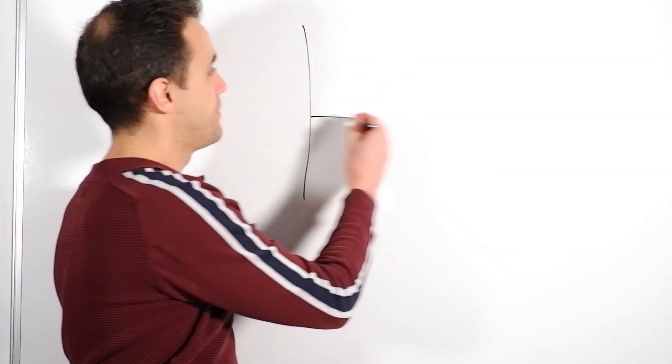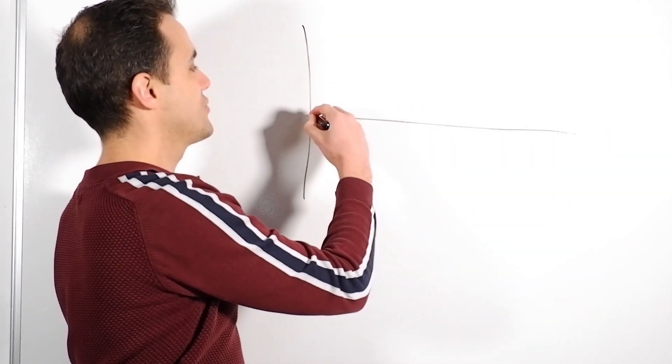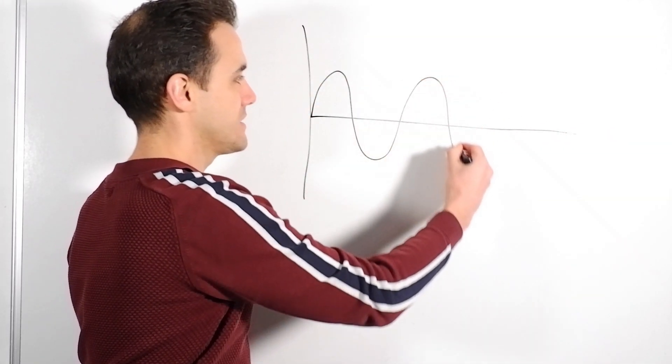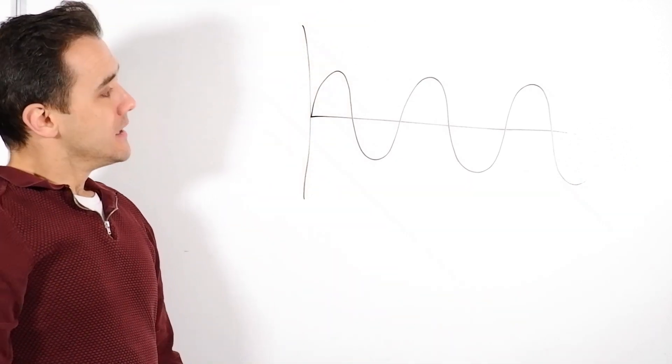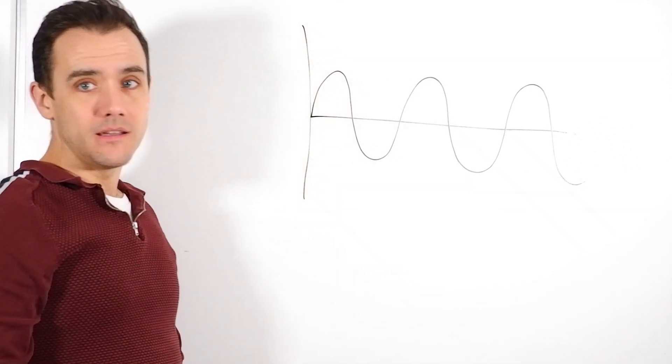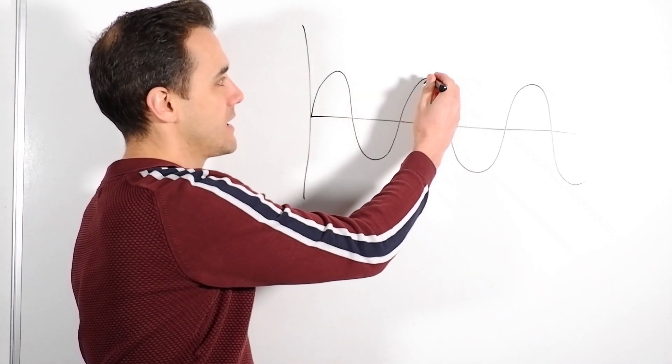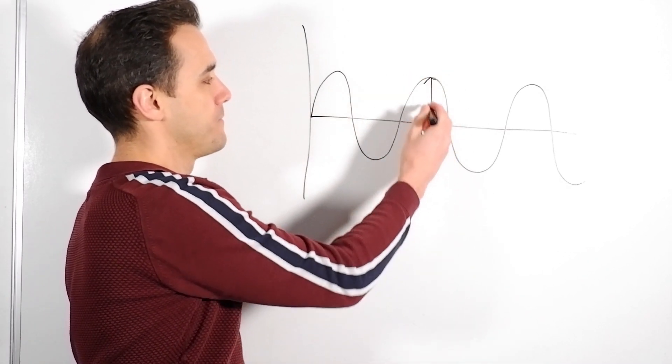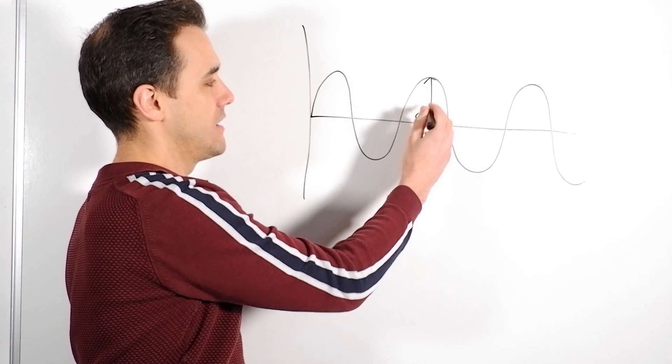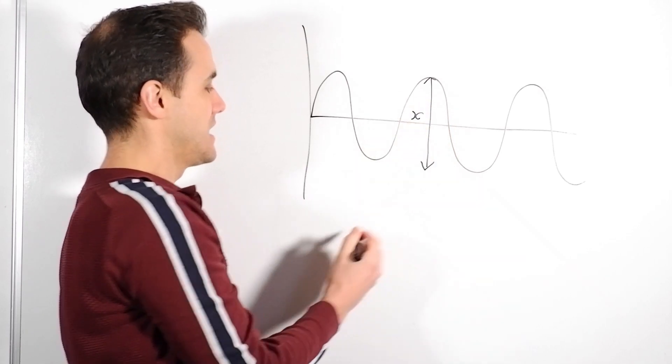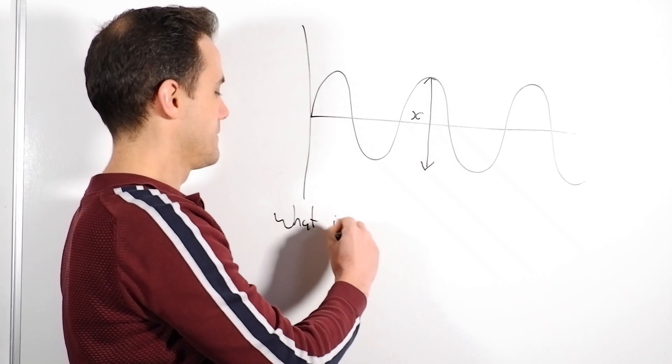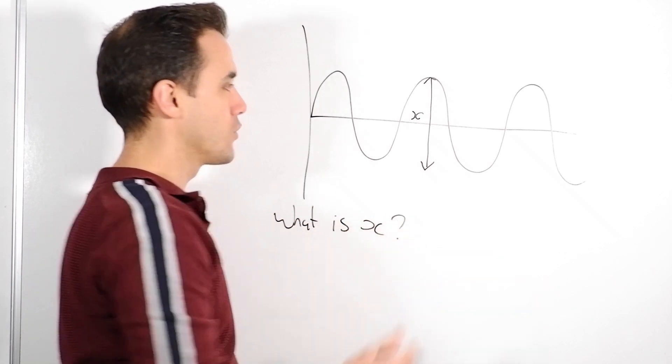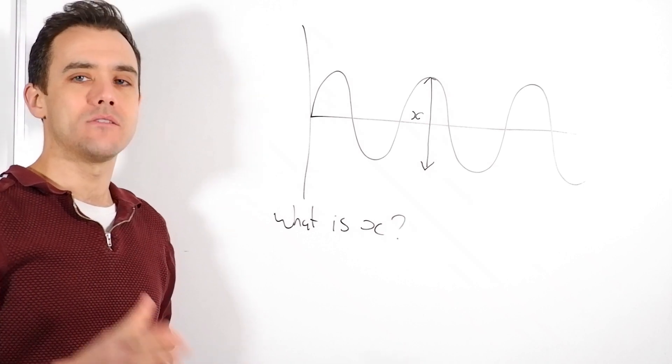What else could they ask us? Well, they could ask us lots of questions about waves particularly, and how might they catch us out? Okay, well, let's have a look. So, there's a wave. How might they catch us out? They might, and I've seen it in an exam before, they might give you a value like this. They might say that this here is x, and they might say, what is x? Or what does x represent on the wave?